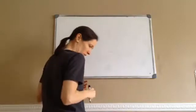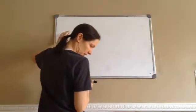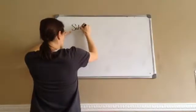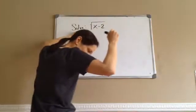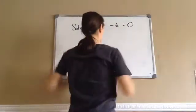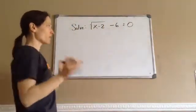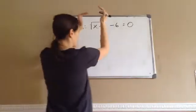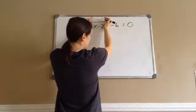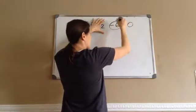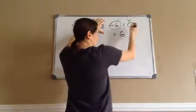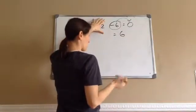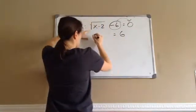I'm going to do problem 108.2 first and then go back to 108.1. The problem says: solve square root of (x − 2) minus 6 equals 0. Remember, you're always trying to get x by itself. So take the minus 6 and move it to the other side — it becomes positive 6. The 0 doesn't matter, so 6 is on the right side.